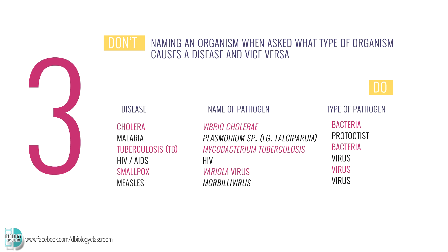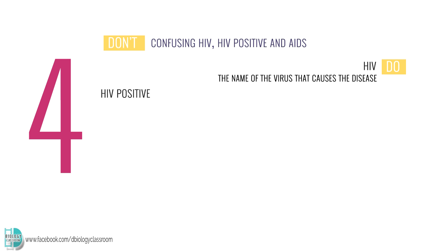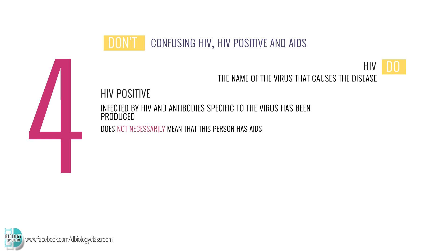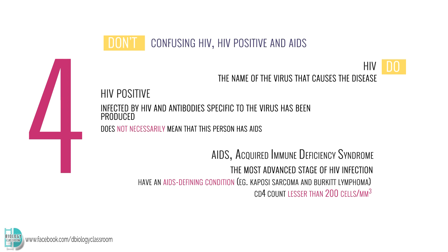Number four: confusing HIV, HIV positive, and AIDS. HIV is the name of the virus that causes the disease. HIV positive means one has been infected by HIV and an antibody specific to the virus has been produced; it does not necessarily mean that this person has AIDS. AIDS, acquired immune deficiency syndrome, is the most advanced stage of HIV infection. To be diagnosed with AIDS, a person with HIV must have an AIDS-defining condition, for example Kaposi's sarcoma or Burkitt lymphoma, or have a CD4 count lesser than 200 cells per millimeter cubed.